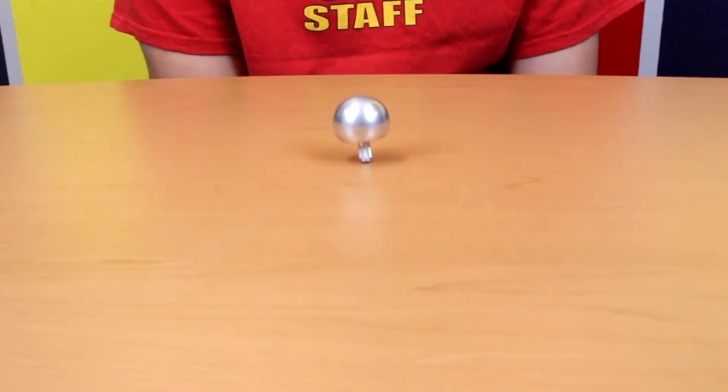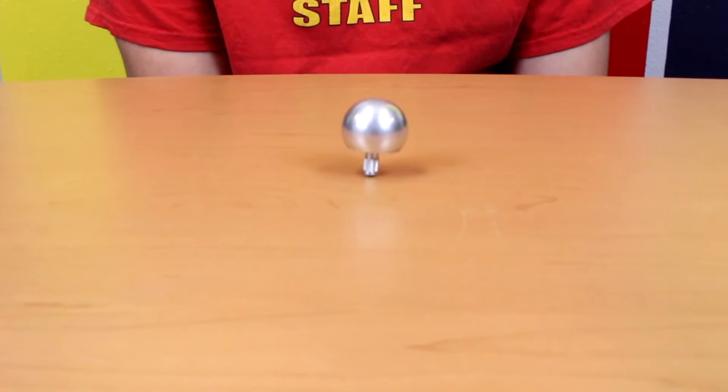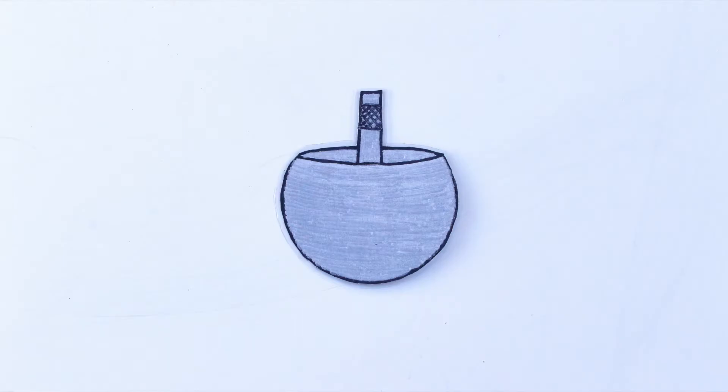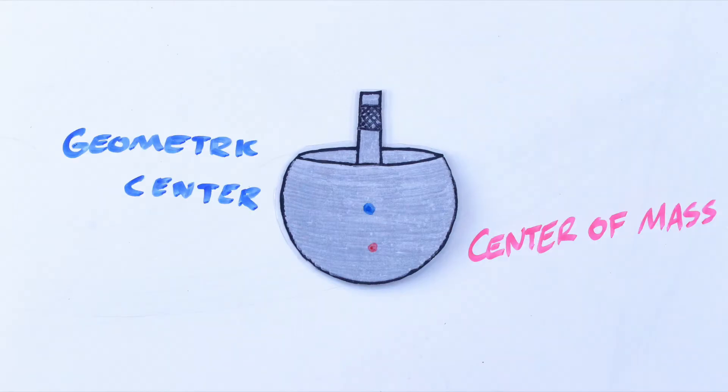The reason it flips over has to do with friction and the shape of the tippy top. The bottom part of the tippy top is a sphere, and the geometrical center of that sphere is a little bit higher than the actual tippy top's center of mass.